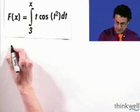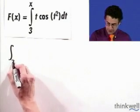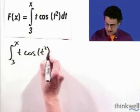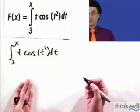So if we evaluate the integral, I'm going to have the integral from 3 to x of t cosine t squared dt. Well, I can't do this directly, so I've got to use some kind of trick.